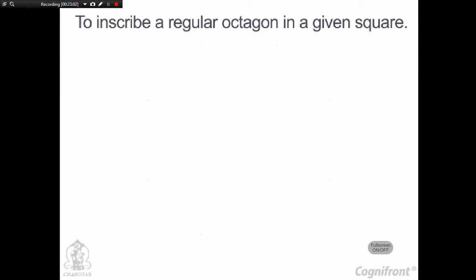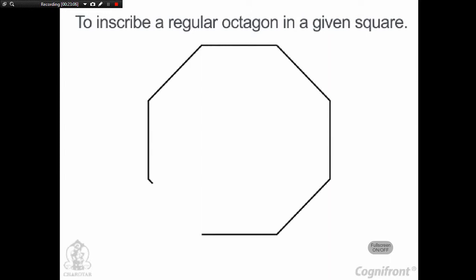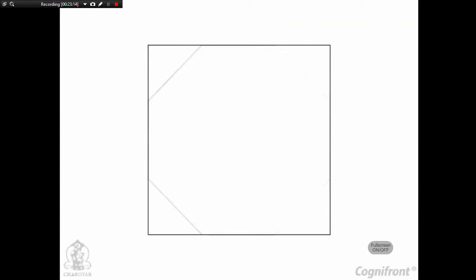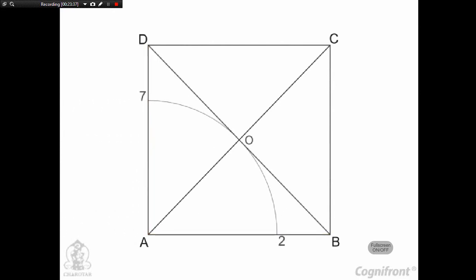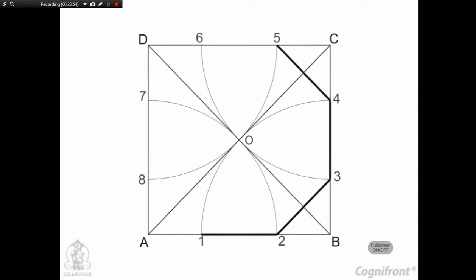To construct a regular octagon inscribed in a given square ABCD: draw the diagonals AC and BD intersecting at O. With A as center and AO as radius, draw an arc cutting edges AB and AD at points 2 and 7 respectively. Similarly, with centers B, C and D and radius AO, draw arcs to obtain remaining points. Finally, join the points 2, 3, 4, 5, 6, 7, 8, 1 thus completing the octagon.